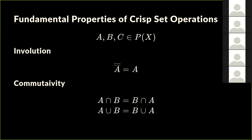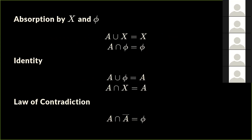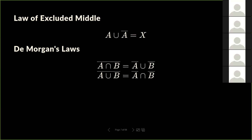Crisp sets have fundamental properties: involution (complement of the complement is the same thing), commutativity, associativity, idempotence, absorption, and identity. The two important ones I'll focus on, because they will change in fuzzy sets, are the law of contradiction — a set and its complement are disjoint — and the law of excluded middle, giving exhaustivity. Last but not least, De Morgan's laws allow distributing negation over union and intersection operators.